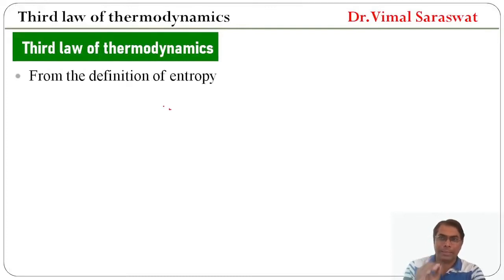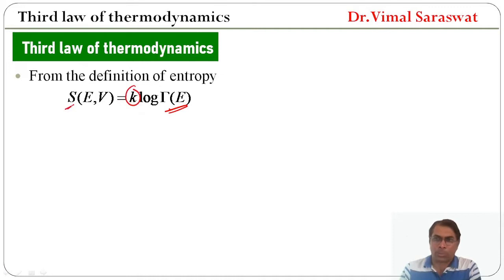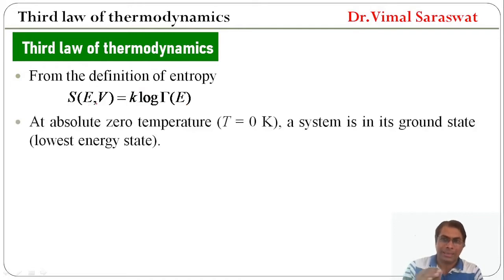From the definition of entropy, S equals k log gamma E, where k is Boltzmann's constant and S is entropy, which is a function of energy and volume. At absolute zero temperature, that is at zero Kelvin, our system is in its ground state, meaning it is at its lowest energy state.